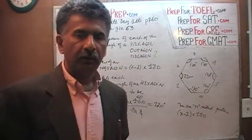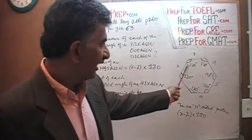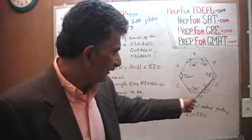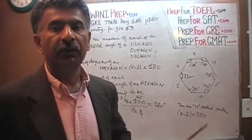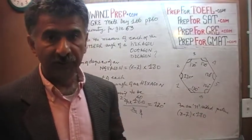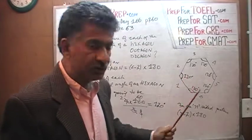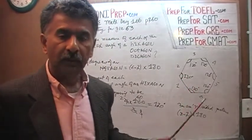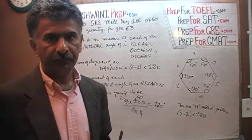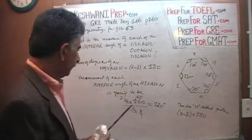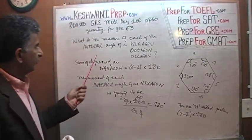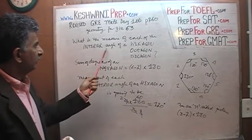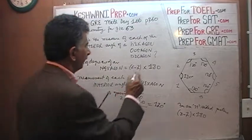All of these angles are 120 degrees — provided that all six sides are equal to each other. If the six sides are equal to each other, then the interior angles will be equal to each other. Conversely, if you're told the six interior angles are equal, that implies all sides must be equal. They go hand in hand. So the measure of each interior angle of a hexagon is 120 degrees.